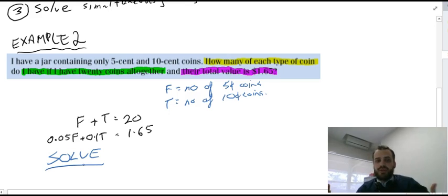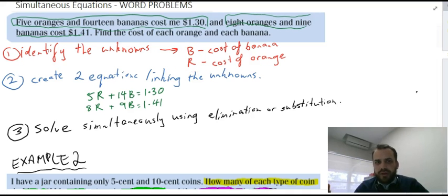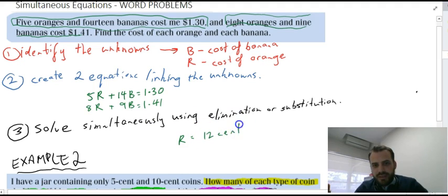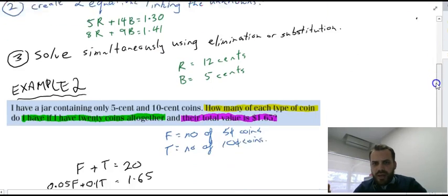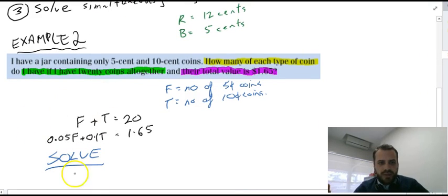I'm not going to go through solving it right now. But you can solve it using elimination or you can solve it using substitution, whichever one you think is going to be easier to do it. Before I go, if you do want to try this yourself, I'll give you the answers so you can check your work. It turns out that the oranges cost $0.12 each and the bananas cost $0.05 each. You can put 12 and 5 into this equation, you'll get $1.30. And if you put 12 and 5 into this equation, you'll get $1.41. That's how I know I'm right.